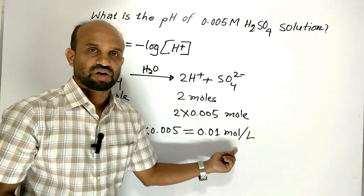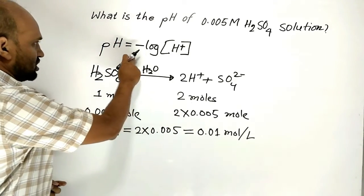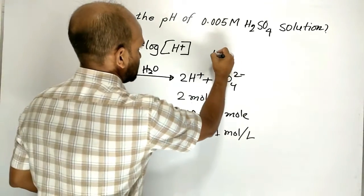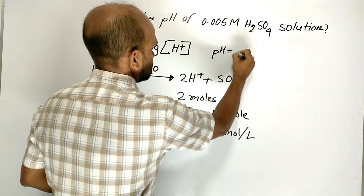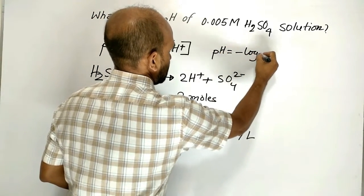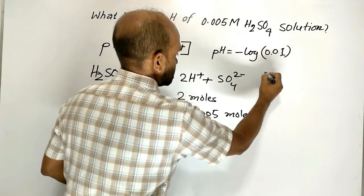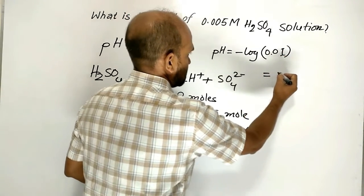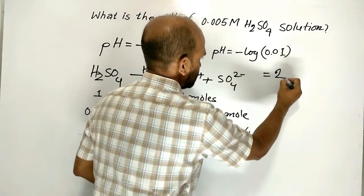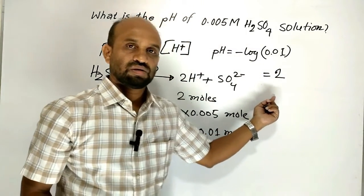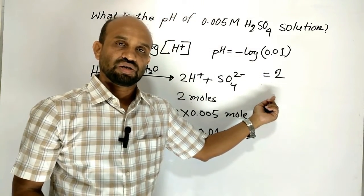Putting this value in the above equation, we get pH equals minus log of 0.01, which equals 2. That is, the pH of the solution is 2.